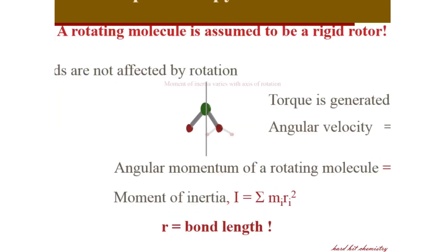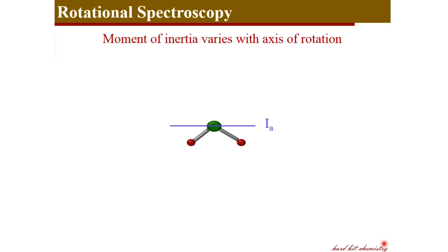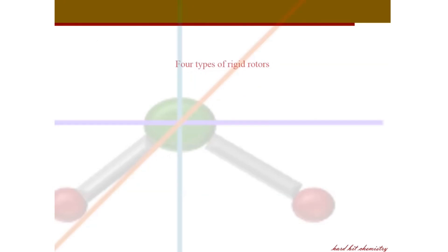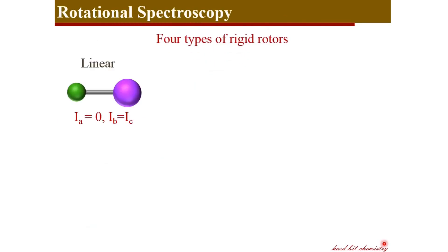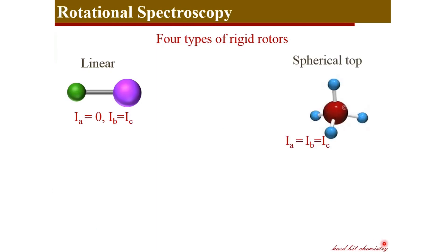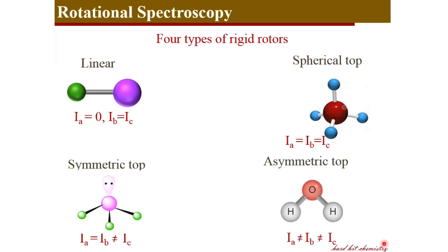When a molecule rotates about different axes, different moments of inertia are associated with each axis. Based on the relations between these moments of inertia, molecules are classified into four types: linear, spherical tops, symmetric tops, and asymmetric tops. Spherical tops are the most symmetric, with all moments of inertia equal, whereas asymmetric tops are the most asymmetric, with all moments of inertia different from each other.